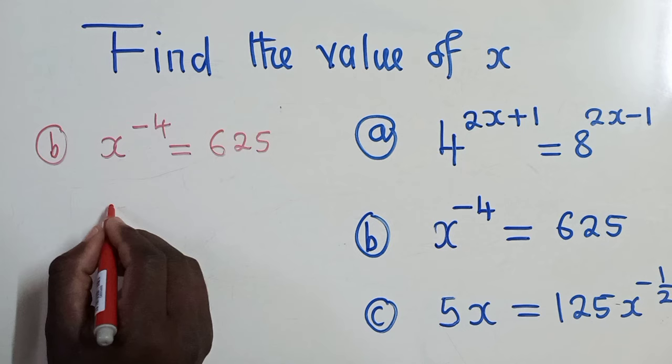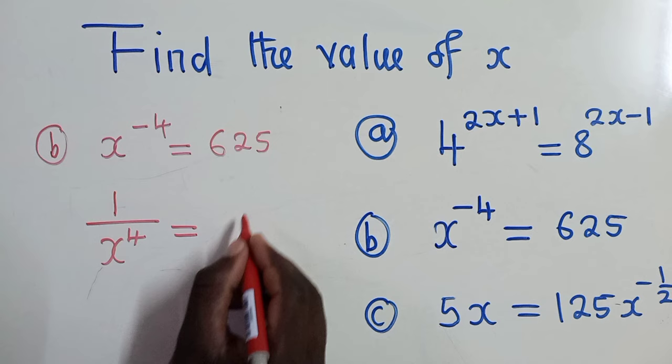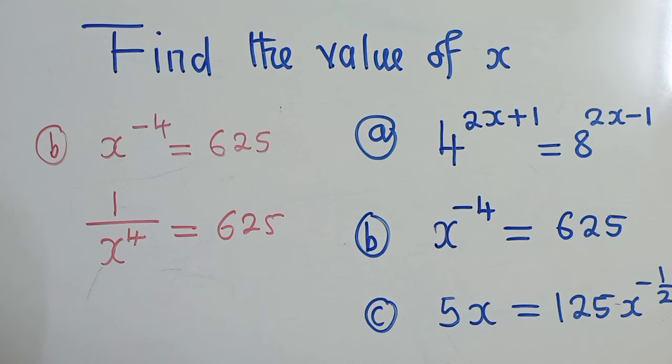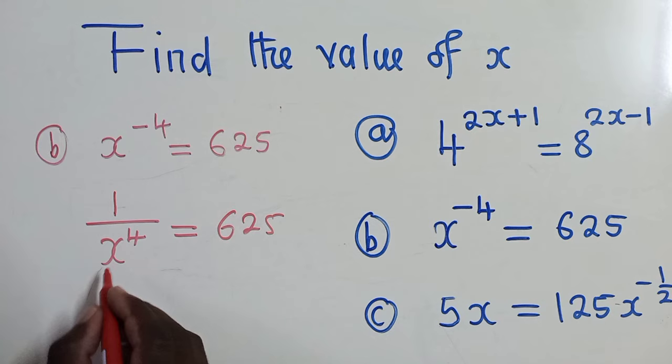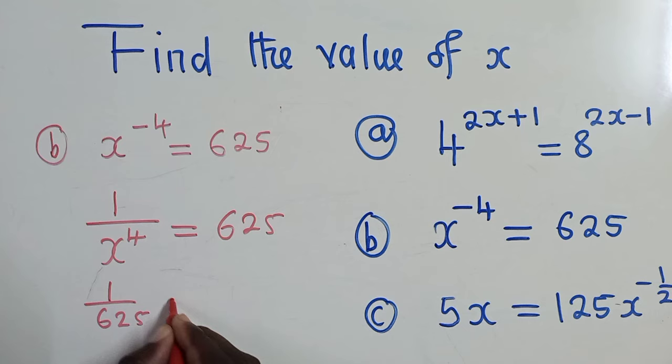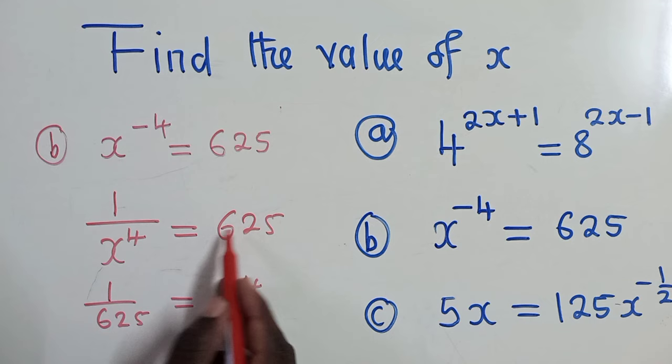So it will be 1 over x power 4, which is equal to 625. So we have now this. The next thing here would just be to cross multiply. So we shall have 1 over 625 is equal to x power 4. So we just cross multiply. This comes on top and this one also down here.